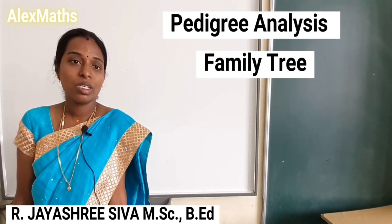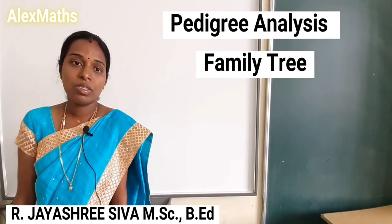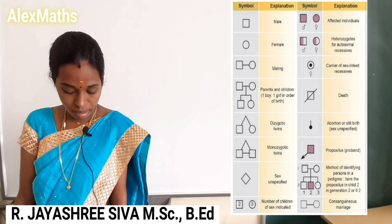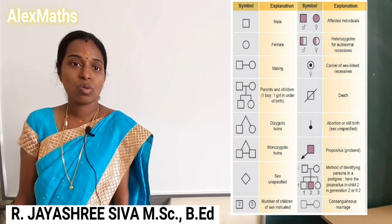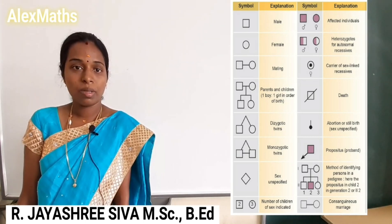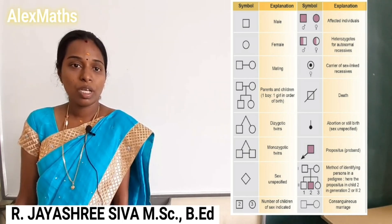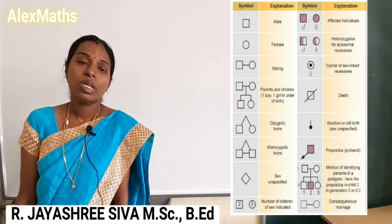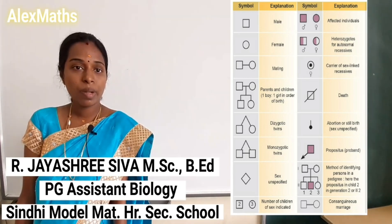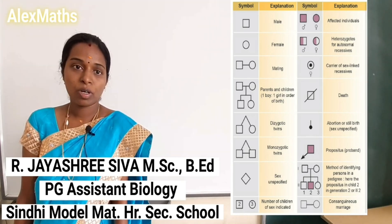Explain the pedigree analysis. Already mentioned: 2 marks and 3 marks. What is a family tree? Define family tree — pedigree analysis. You can find 5-mark questions on pedigree analysis as well. The symbols used in pedigree analysis include squares and circles — square represents male and circle represents female. Note this question: define pedigree analysis, define family tree (2 or 3 marks). For 5 marks, explain the pedigree analysis symbols — you can draw the symbol and explain it. These are the important questions in this lesson. All the best.